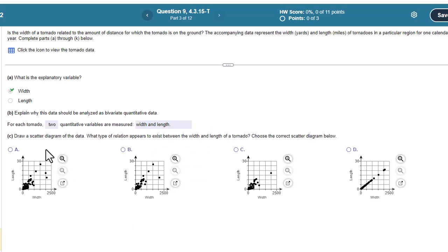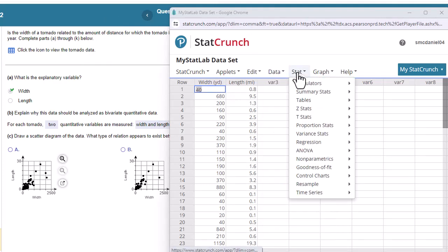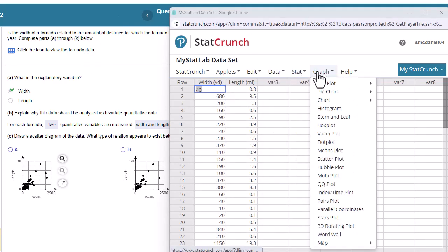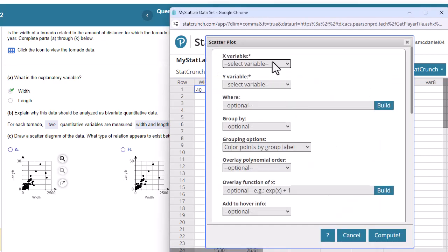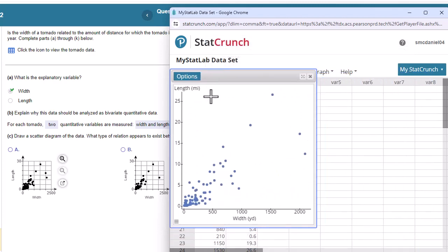Now draw a scatter diagram of the data. What type of relationship appears to exist between the width and length of tornadoes? Choose the correct graph. Here is our data right here. I'm going to go ahead and go to graph and scatter plot. So the width we're saying is the x. Length is the y, response variable, explanatory variable. Just press compute. And there we go.